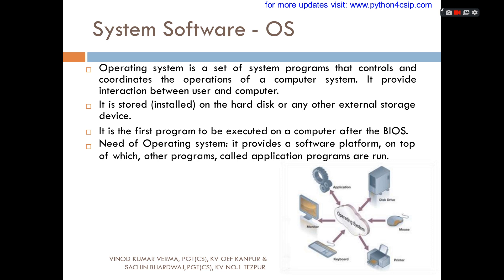The operating system saves data into the hard disk and external storage devices, processes it through the control unit and ALU, and results are shown through the output unit. These actions are carried out by whatever operating system is installed. It is the first program to be executed on a computer after BIOS. BIOS stands for basic input output system. Whenever you boot up your system, BIOS is activated first.